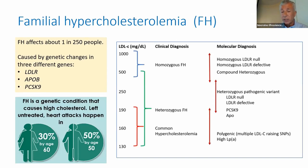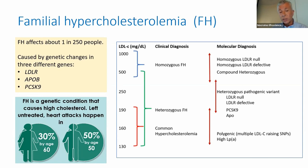Familial hypercholesterolemia affects one in 250 people and is caused by genetic mutations primarily in three genes: LDLR, ApoB, and PCSK9, which is involved in recycling the LDL receptor. This genetic condition has quite a significant effect: if you have FH, your chances of having a heart attack are 30% by age 60 in females and 50% by age 50 in males.